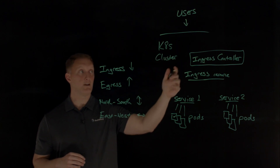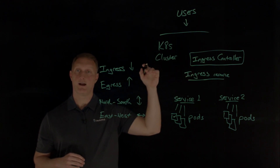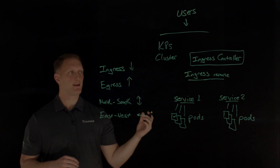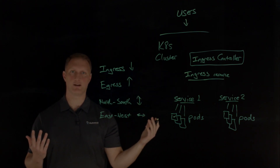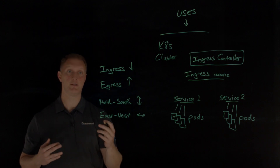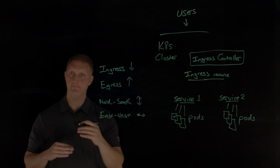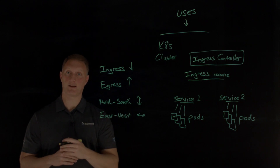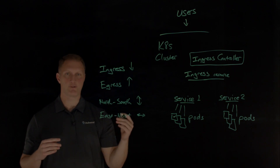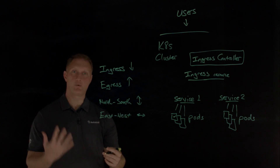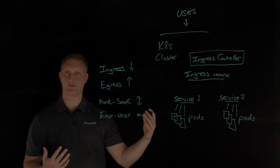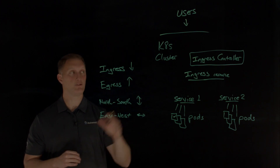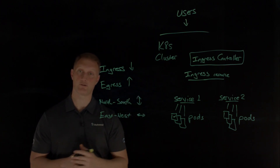Another function of the ingress controller is as an API gateway. API gateway functions can include things like TLS termination, client authentication, rate limiting, different access control, and request routing at layers four through seven. There are a lot of different API gateway functions available right here in the ingress controller.